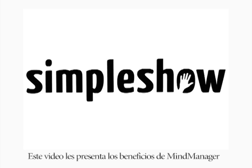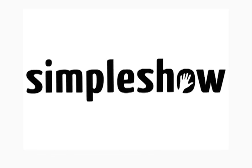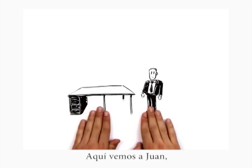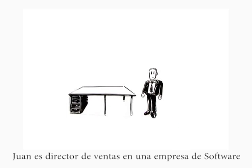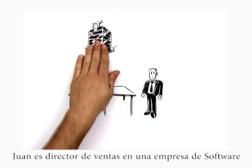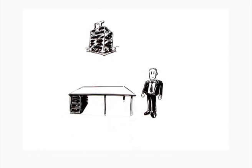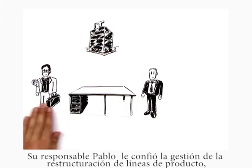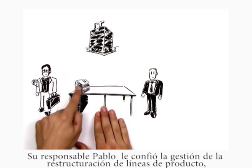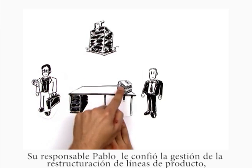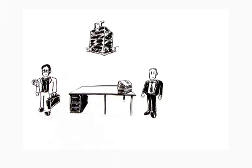The Simple Show explains MindManager. This is Paul. Paul is sales manager at a software company. His boss Ian has put him in charge of the company's planned reorganization of its product lines.